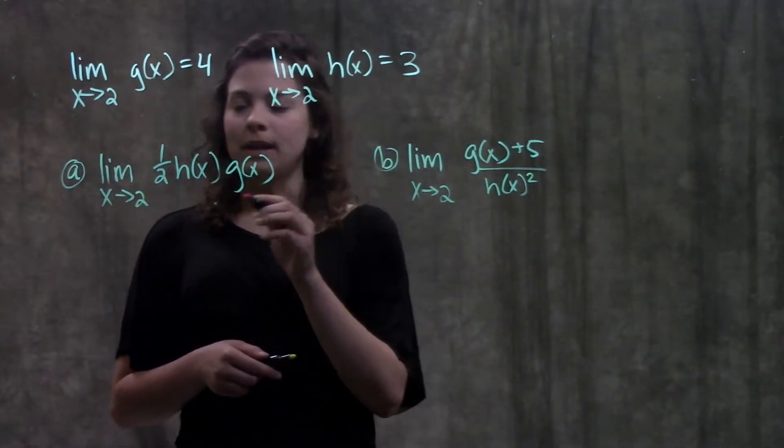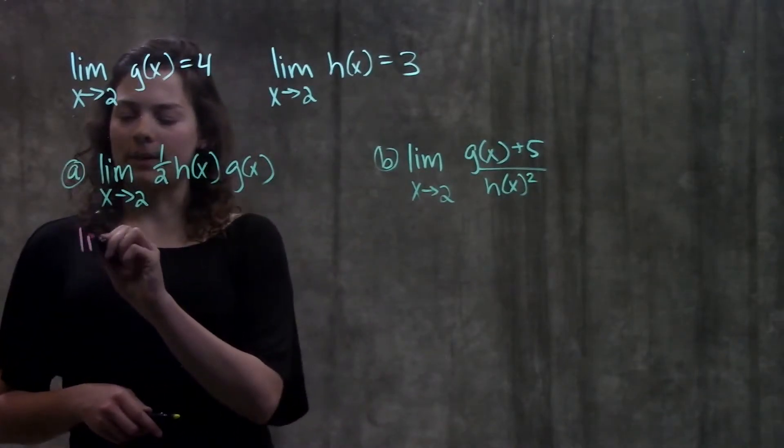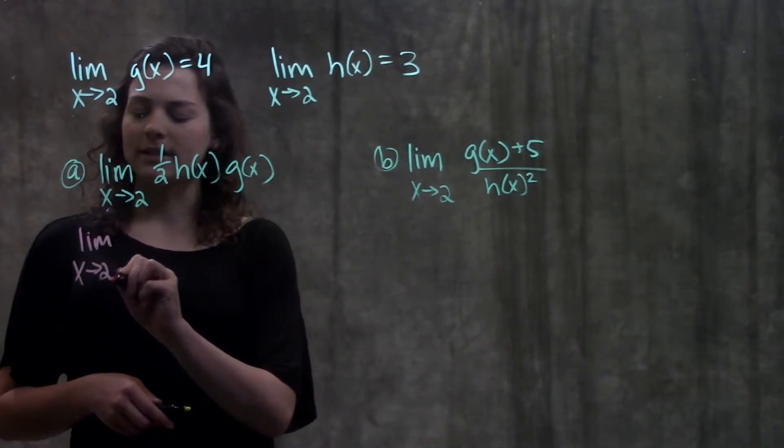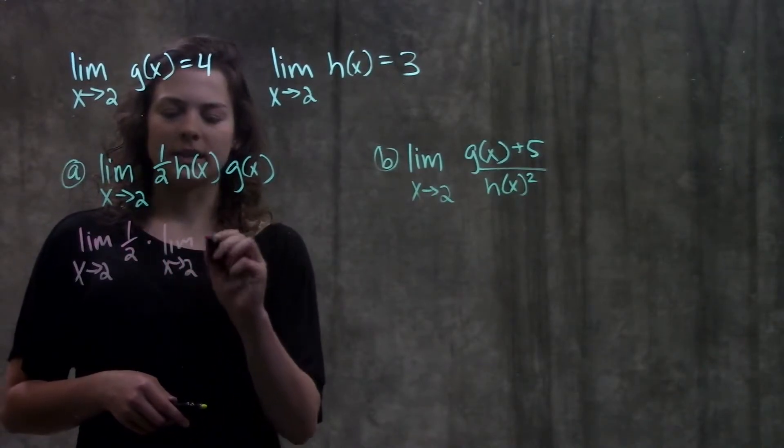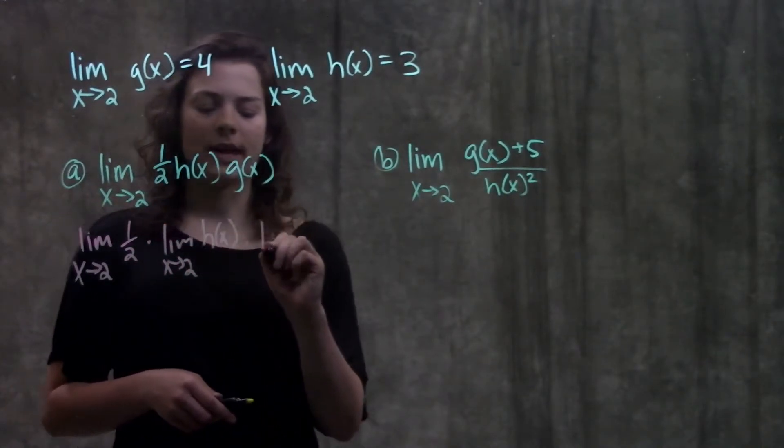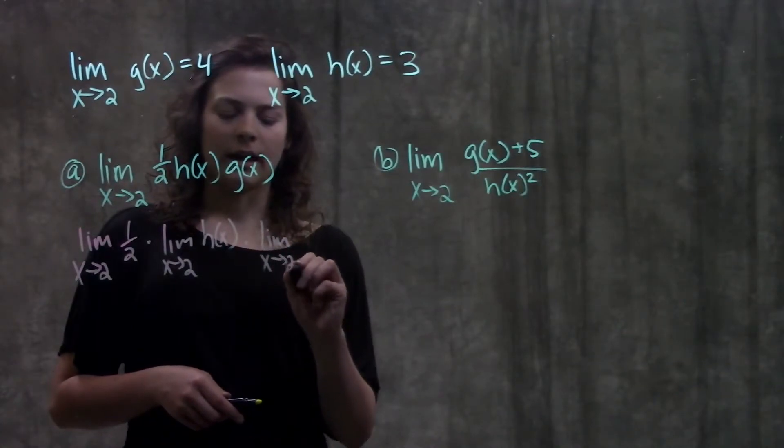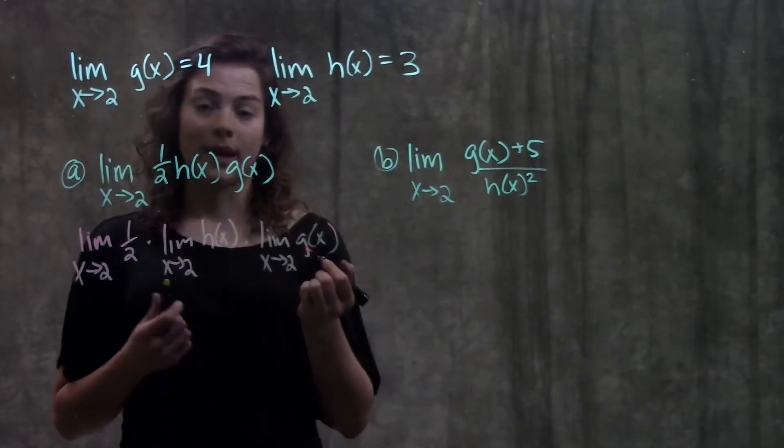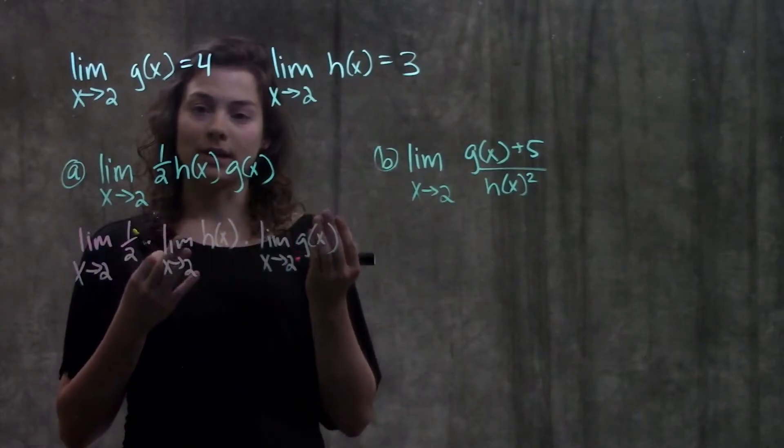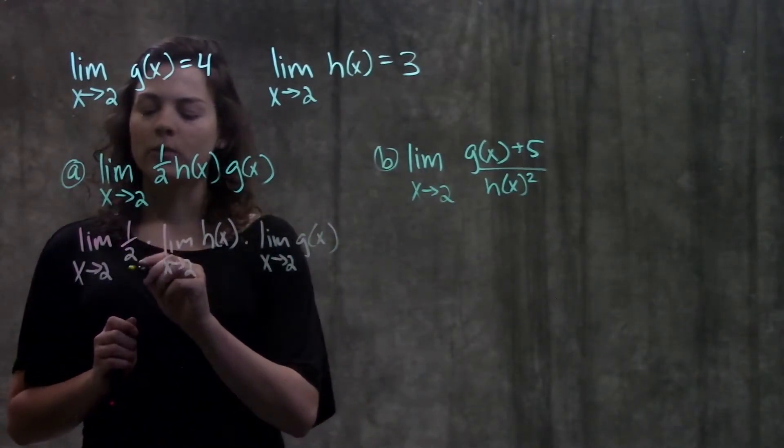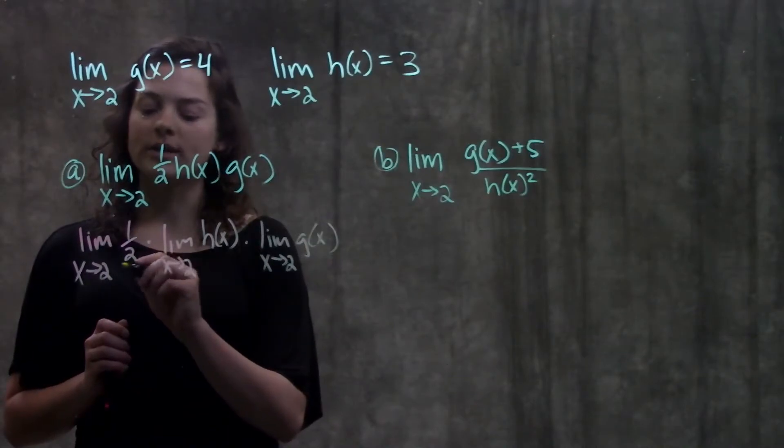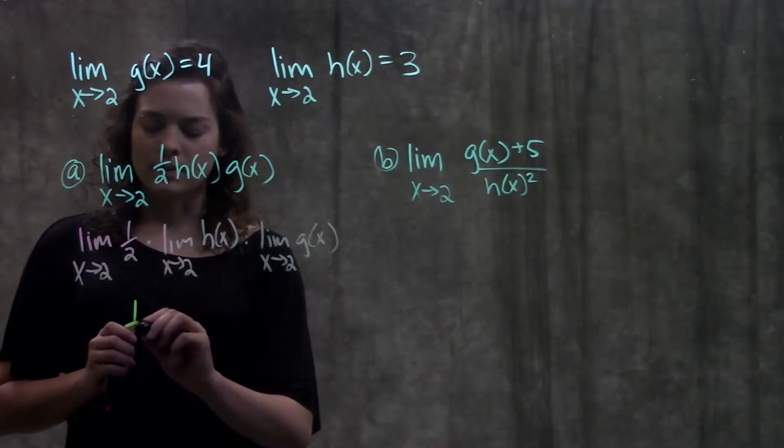So we can use our multiplication limit and just separate this out into three separate limits. So this becomes a limit as x approaches 2 of 1 half times limit as x approaches 2 of h of x times g of x. And from here I have values for all these parts. For my limit as x approaches 2 of 1 half, whenever I have a constant the limit is always just equal to that constant. So this becomes 1 half.